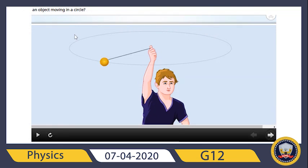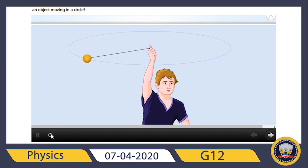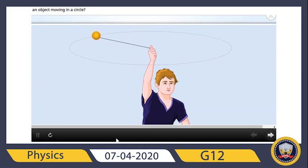Now we can watch a video about centripetal force. If you've ever whirled a ball on a string, you know you can keep the ball moving in a circle as long as you hold on to the string. If you let go of the string, the ball will fly away from you. Without centripetal force, the ball will travel in a straight line.